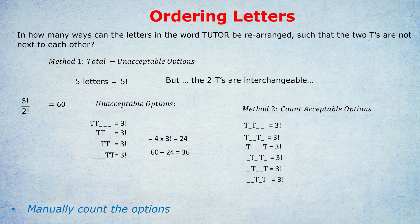In total, this was six acceptable options, each one having three factorial, or six arrangements. Six times six, or six times three factorial which is six, equals 36. So notice we get the same answer as earlier.